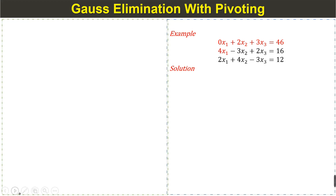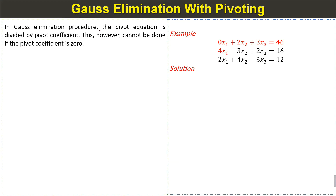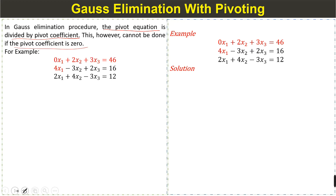In the Gauss elimination procedure, the pivot equation is divided by the pivot coefficient. However, this cannot be done if the pivot coefficient is 0. For example, given a system of equations where the first equation is the pivot equation, if the pivot coefficient is 0, we cannot apply the Gauss elimination method directly.